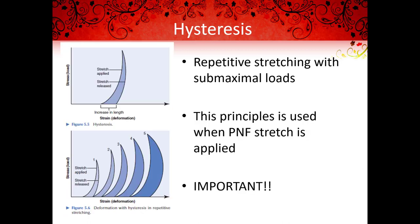Hysteresis involves repetitive stretching with submaximal loads to increase the range of motion. Heat is created during stretching, increasing the range of motion the more the tissue is stretched. As the tissue changes in length and becomes heated with repetitive stretching, higher level loads are tolerated in subsequent repetitions. This principle is used when proprioceptive neuromuscular facilitation, or PNF, stretches are applied, released, and then reapplied to a patient's muscles. As the muscle continues to be stretched, the patient can tolerate slightly greater stretch forces.